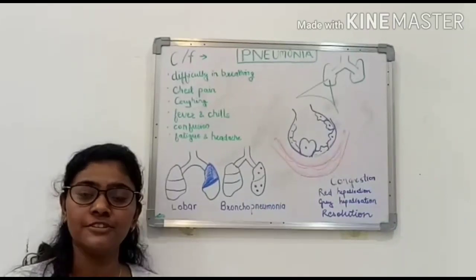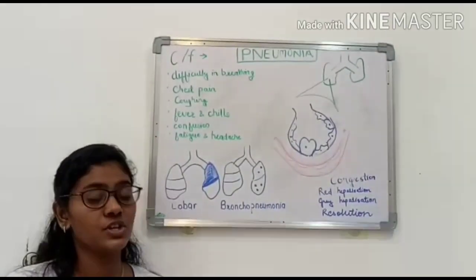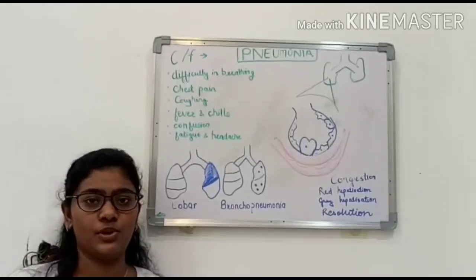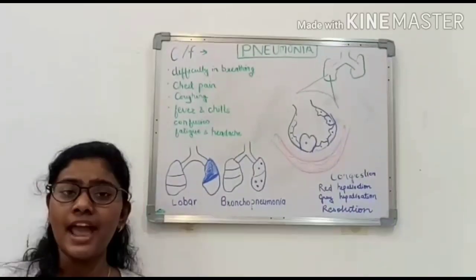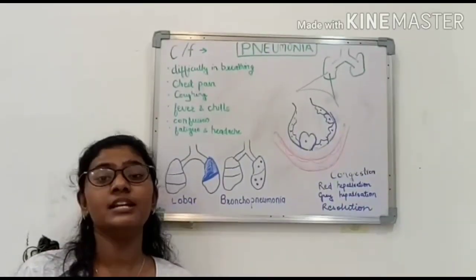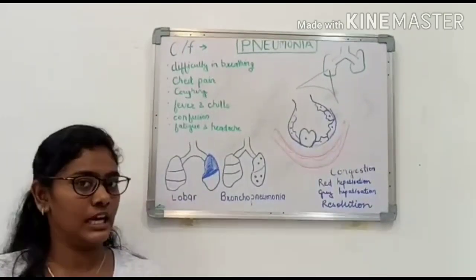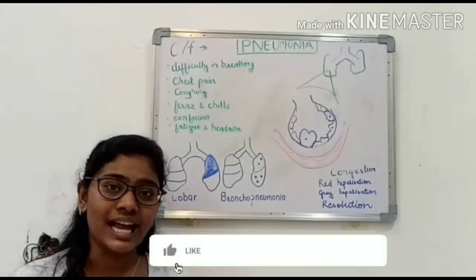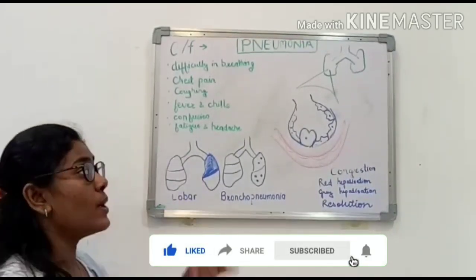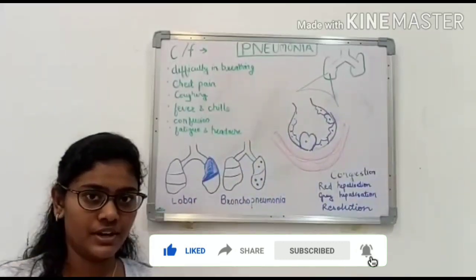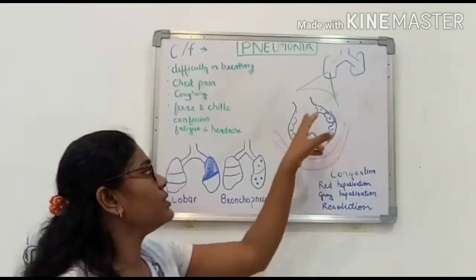We will now discuss about the infection pneumonia. Pneumonia is the most common infection caused by Streptococcus pneumoniae. Pneumonia is the infection of the lung parenchyma — that is, the functional part of the lungs. As we know, the bacteria enters the respiratory tract through the inhalation route, moves down into the lungs, and eventually reaches the alveoli.